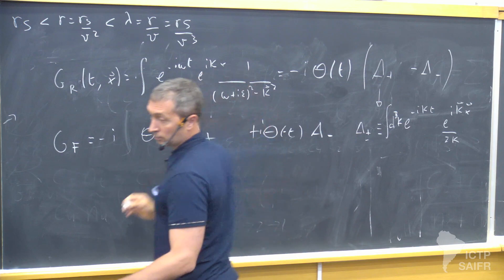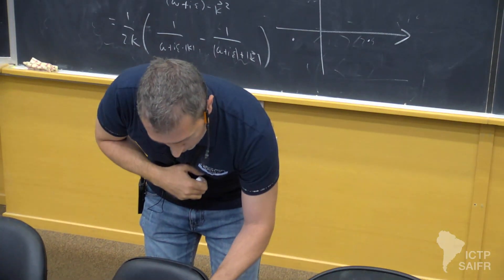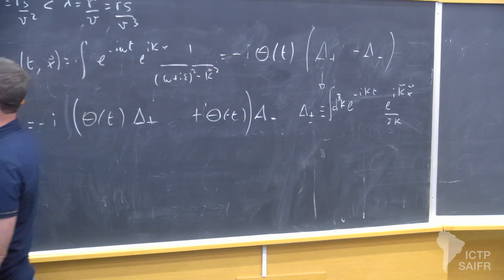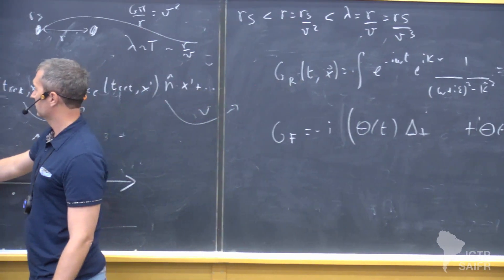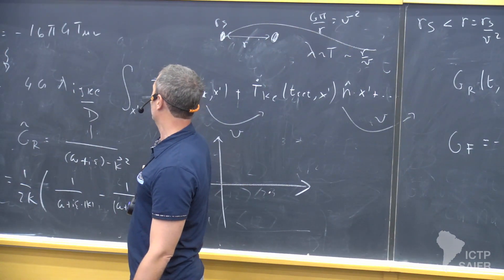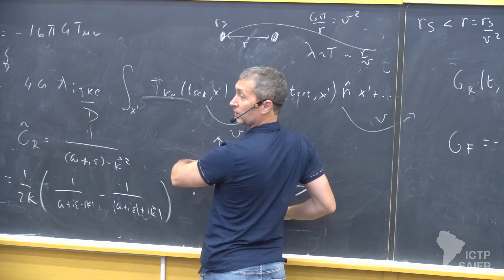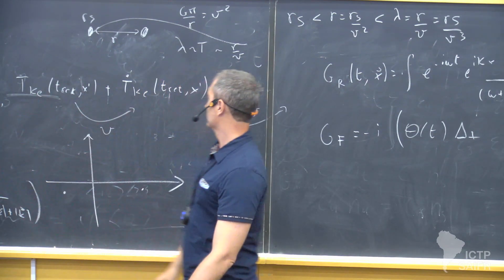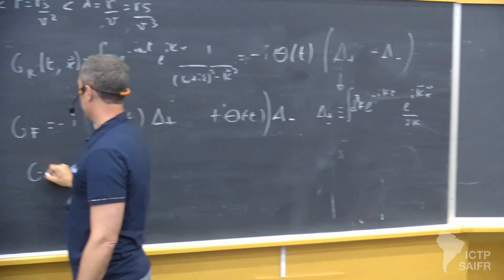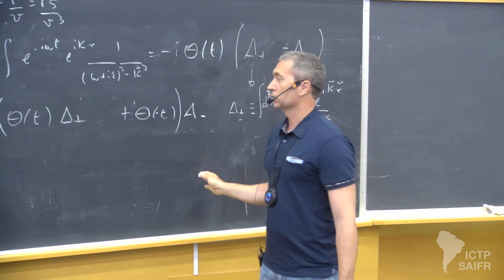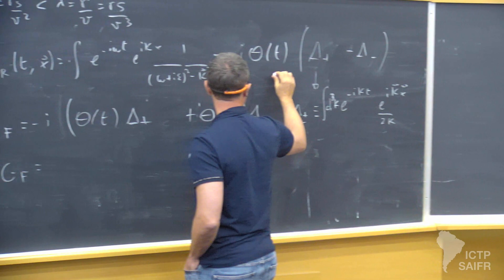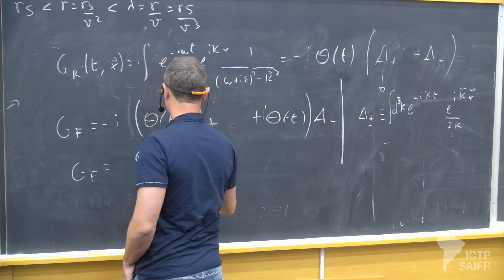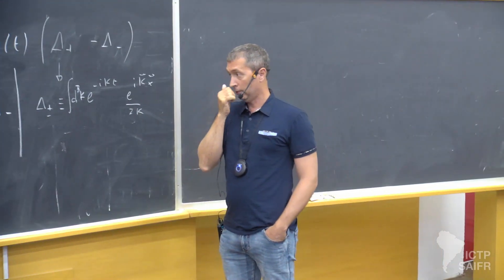The Feynman Green function is theta times delta plus plus theta times delta minus, modulo an i in front. So these are simple exercises — you just do the integration over omega of this shape. For the Feynman Green function, the i epsilon goes outside because you have a different prescription. Then the two poles go one here and one there, so you have non-zero results both if you close downstairs for t larger than zero, and if you close upstairs for t smaller than zero.